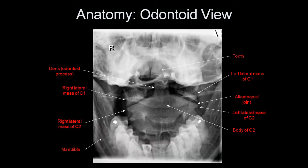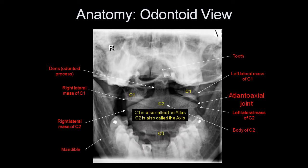On the odontoid view, you can see the teeth, the odontoid process very well, the lateral masses of C1 and C2, the mandible, the body of C2, and the atlantoaxial joints. The atlantoaxial joint is also called the C1-C2 joint. C1 is also called the atlas, and C2 is also called the axis.